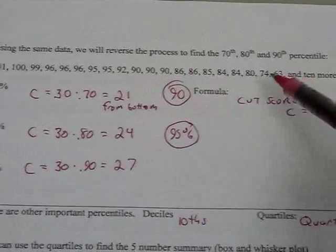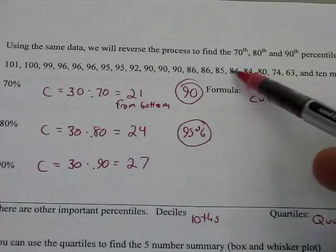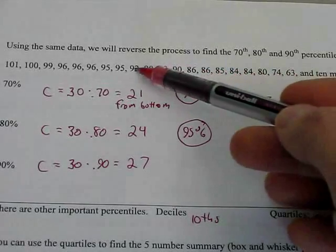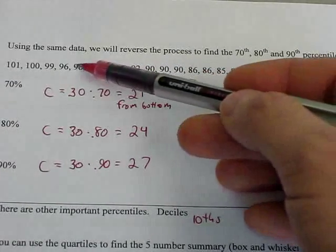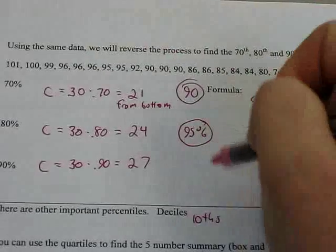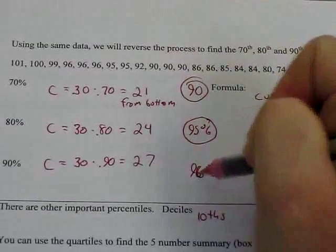This tells me the 27th score from the bottom would give me my cut score for the 90th percentile. So that's 10, 11, 12, 13, 14, 15, 16, 17, 18, 19, 20, 21, 22, 23, 24, 25, 26, 27.